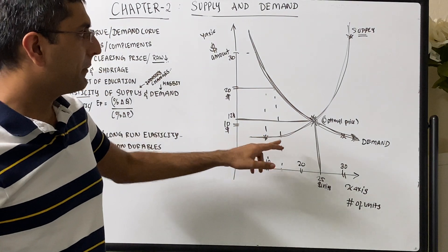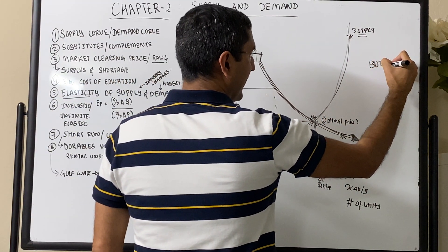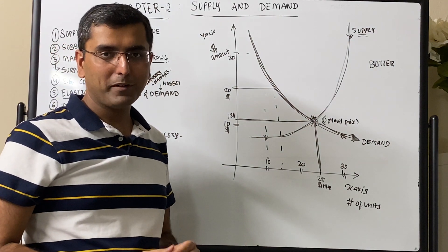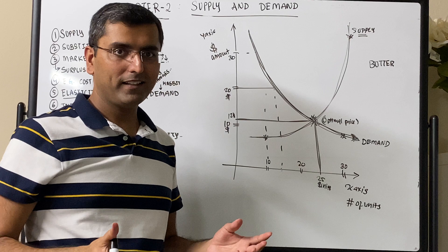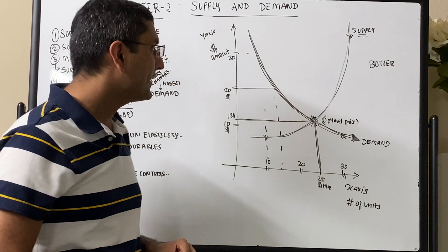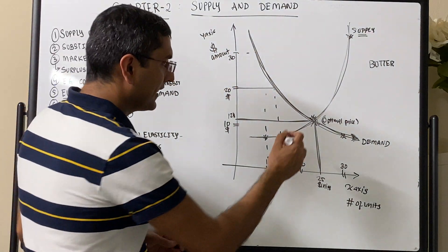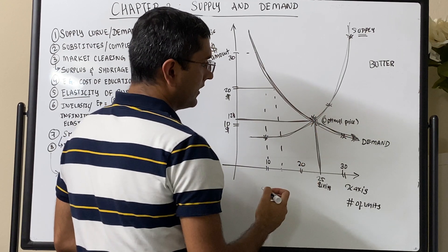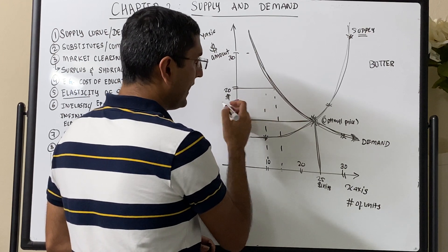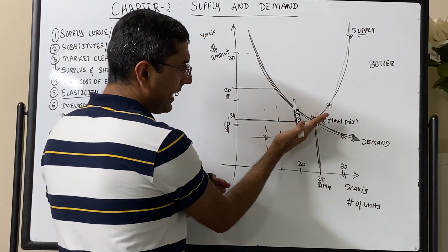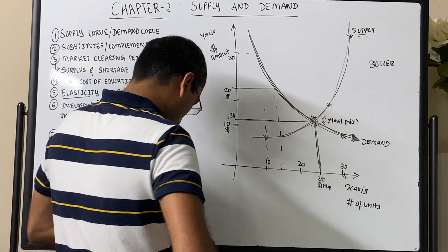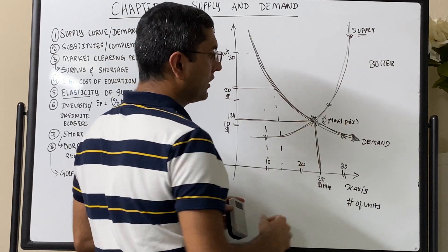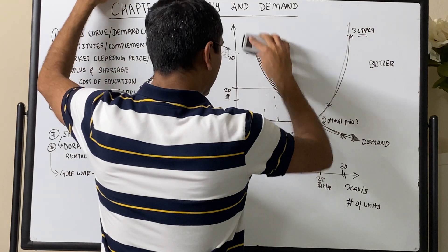Now let's say this demand curve is for butter — 25 units of butter for $12. If the raw material cost of butter goes up — let's say milk becomes expensive — what happens to the demand and supply curves? The supply curve will shift up because it's going to take more money. Let's redraw to see what happens when the price of a raw material goes up.